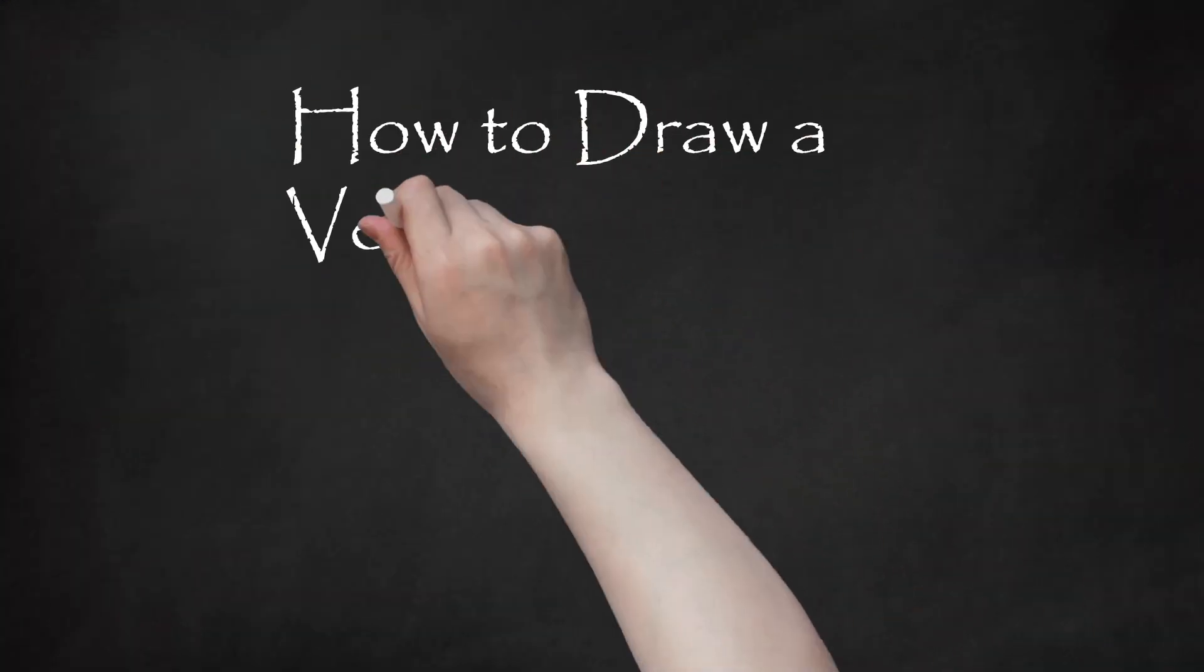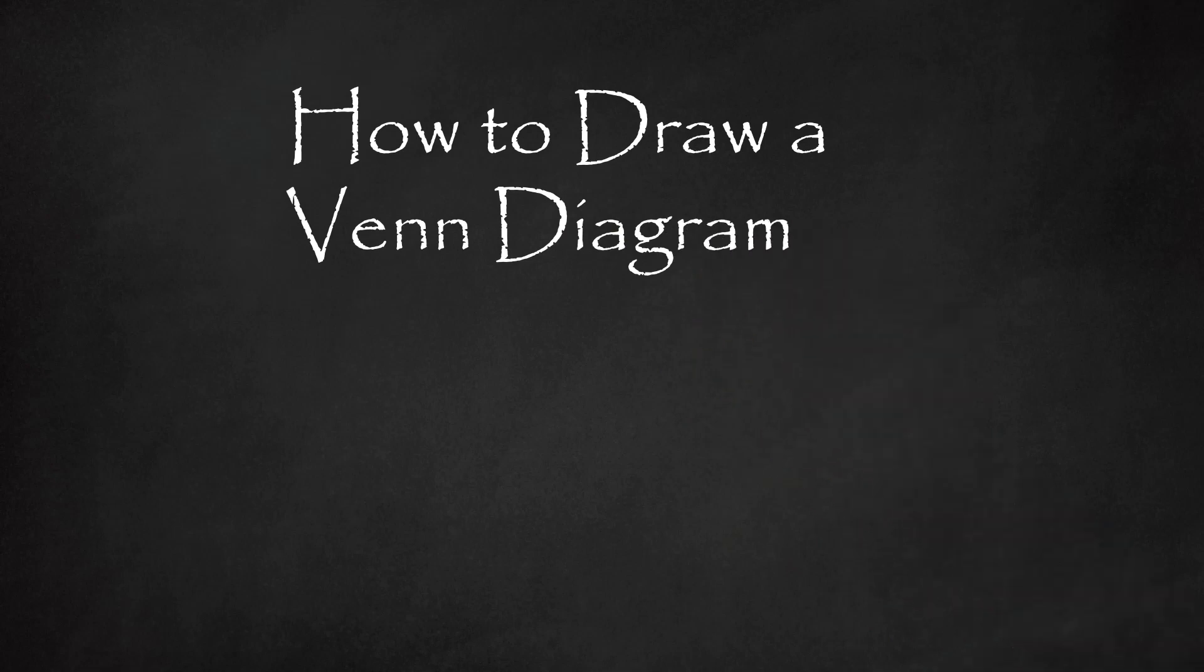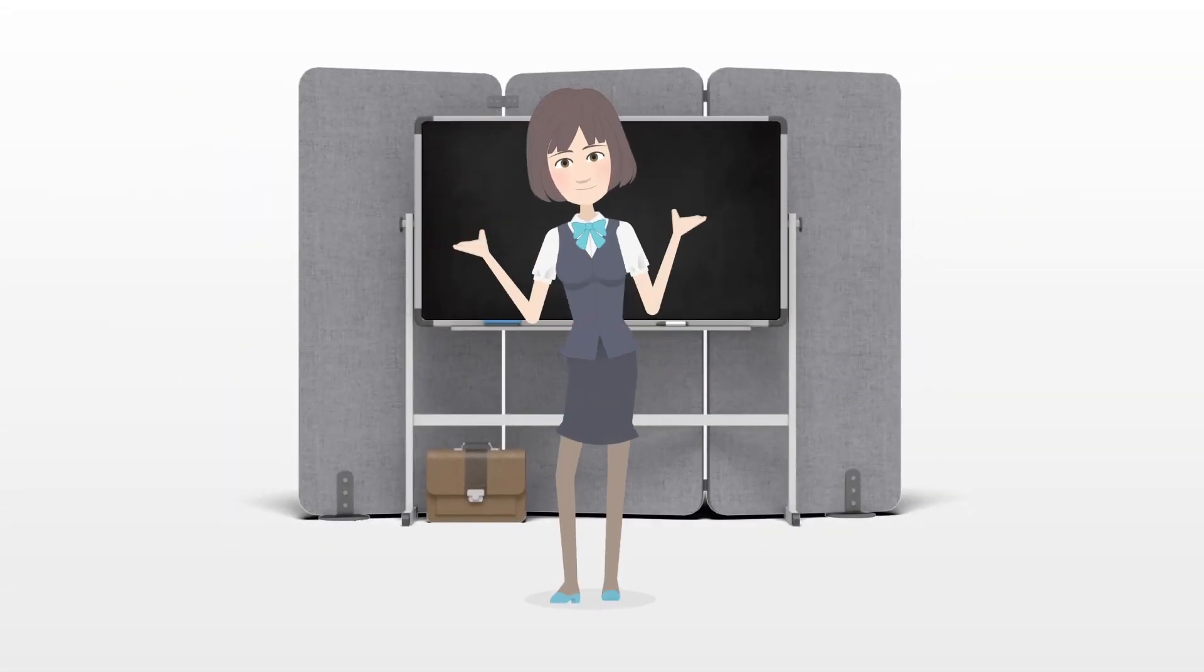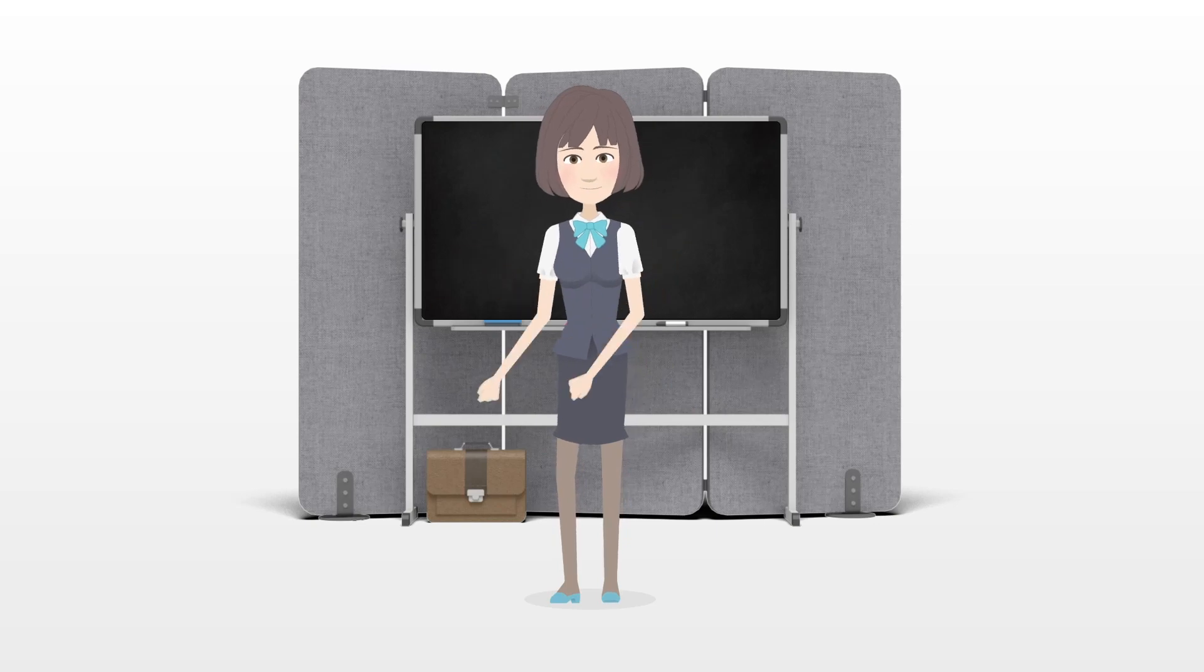How to Draw a Venn Diagram. A Venn diagram is a type of graphic organizer that uses overlapping circles to illustrate logical relationships.